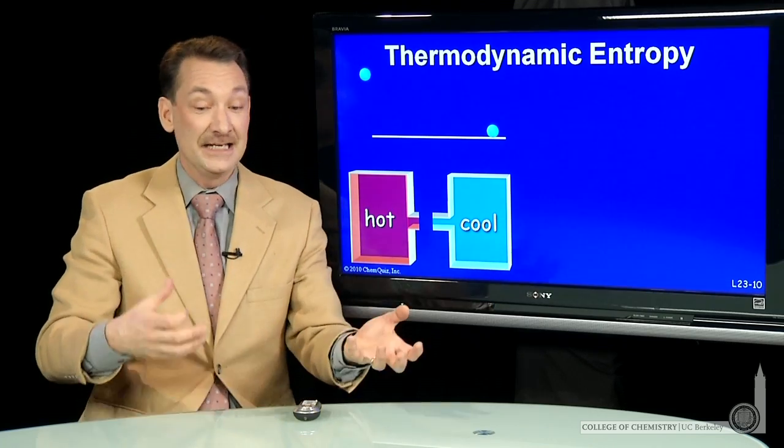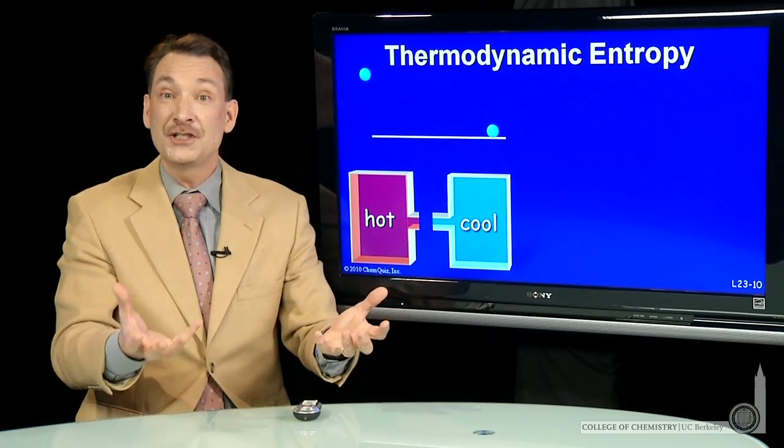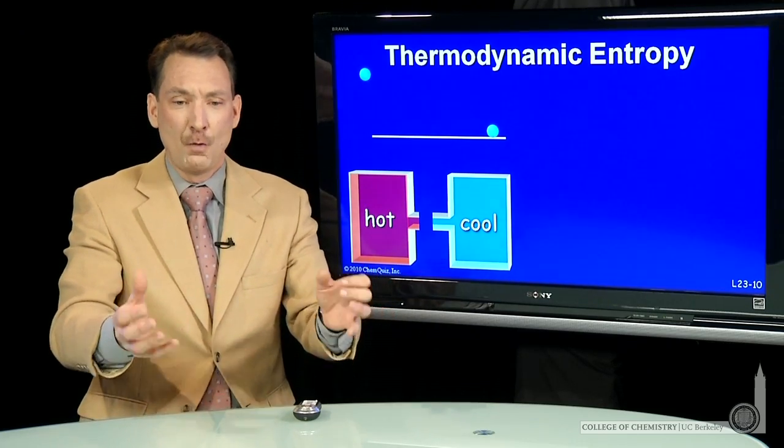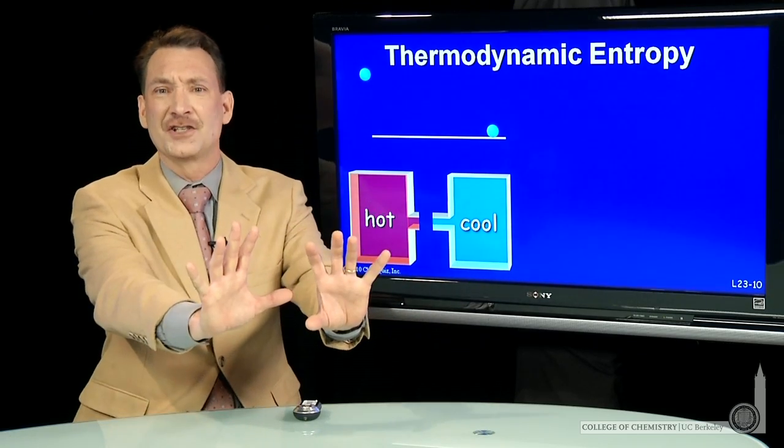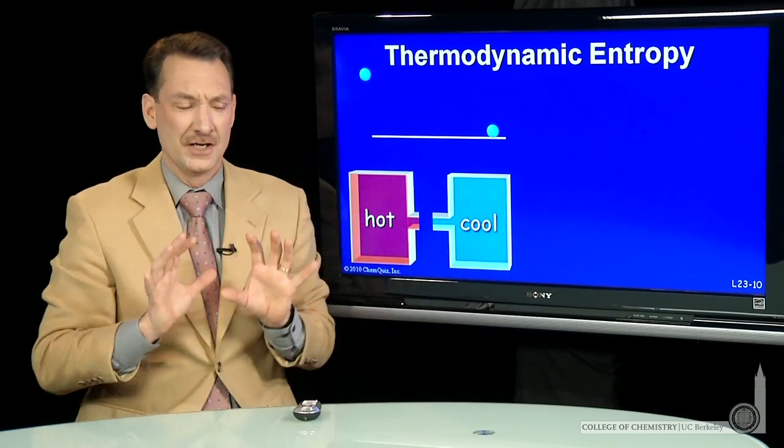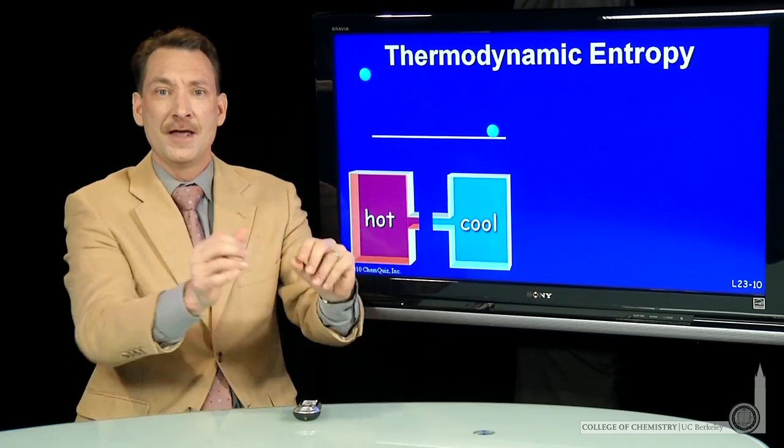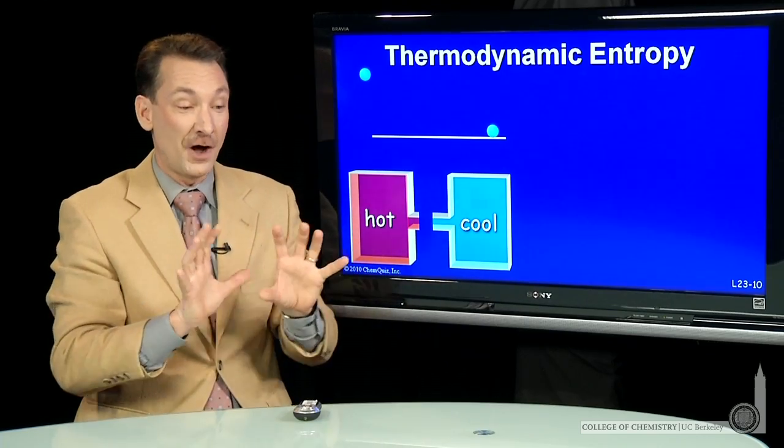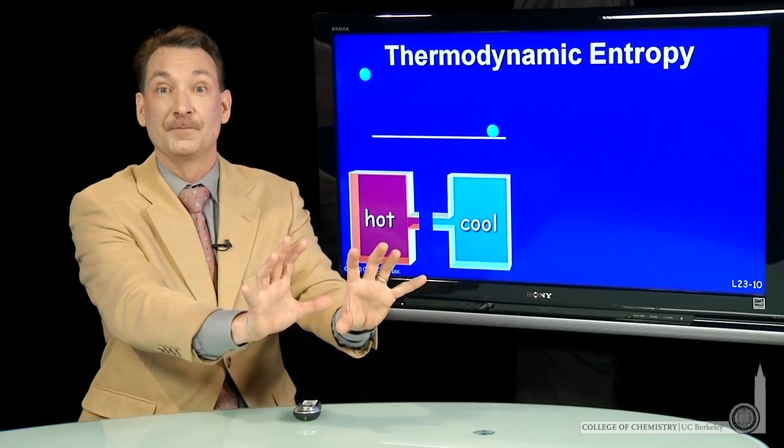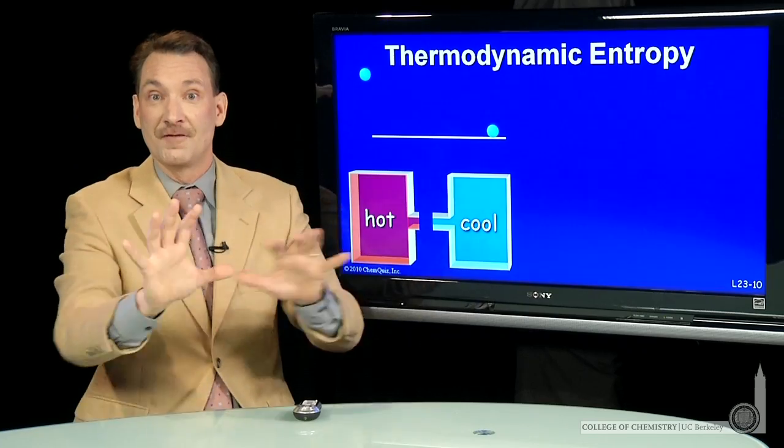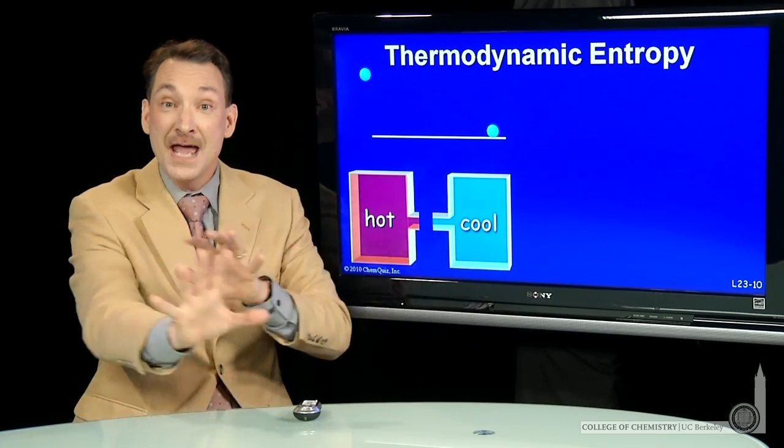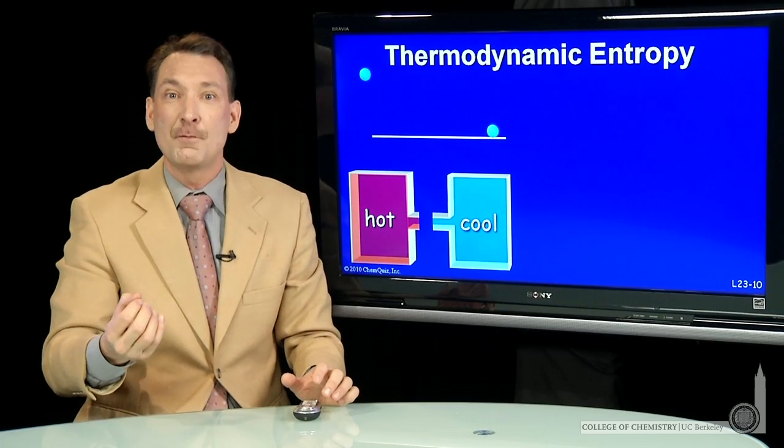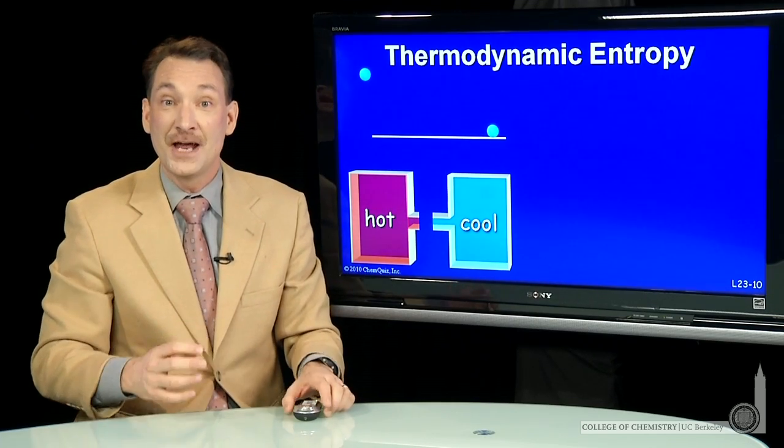When you think about heat and work, you would probably associate entropy with heat over work. Work is a concerted action of particles, all moving in the same direction. There's relatively few microstates involved, whereas heat is the random motion of particles with many microstates involved. So heat is the more naturally associated parameter for entropy.